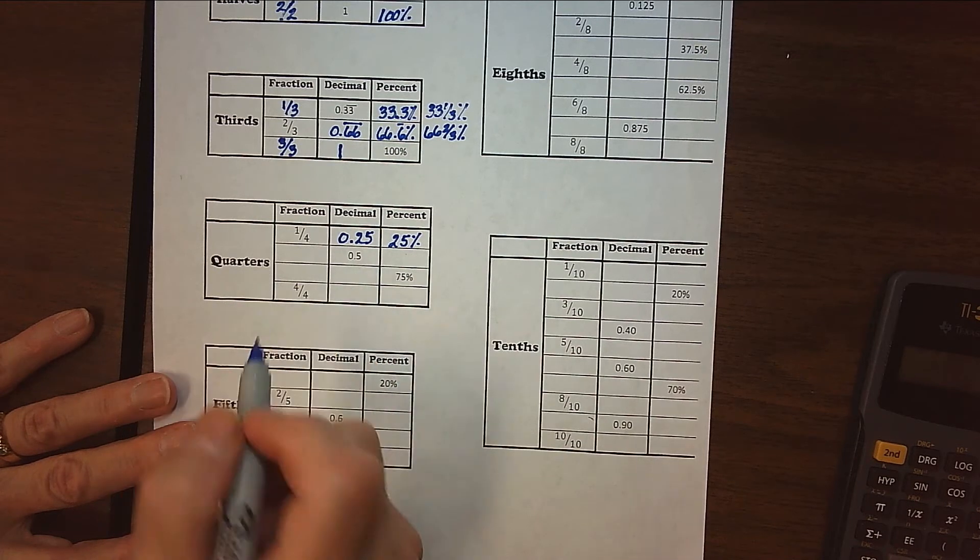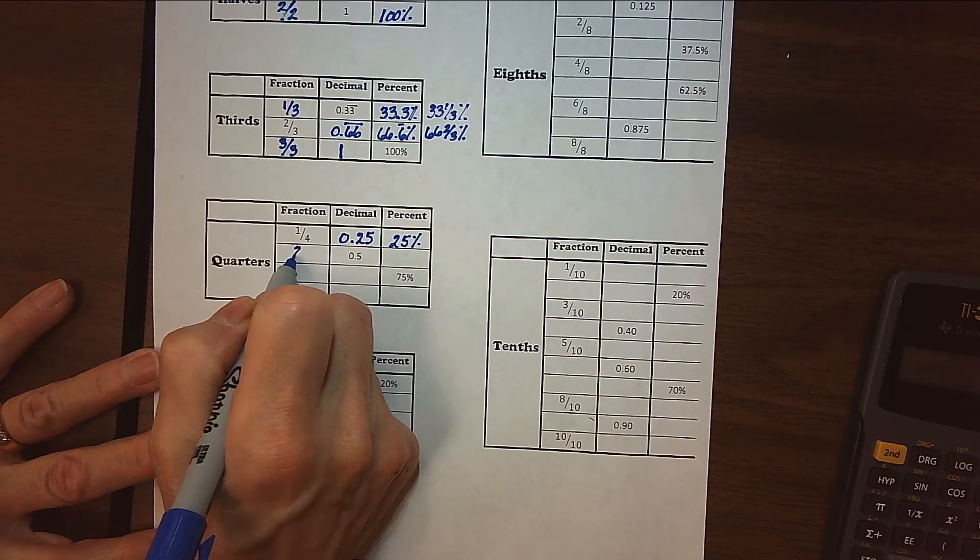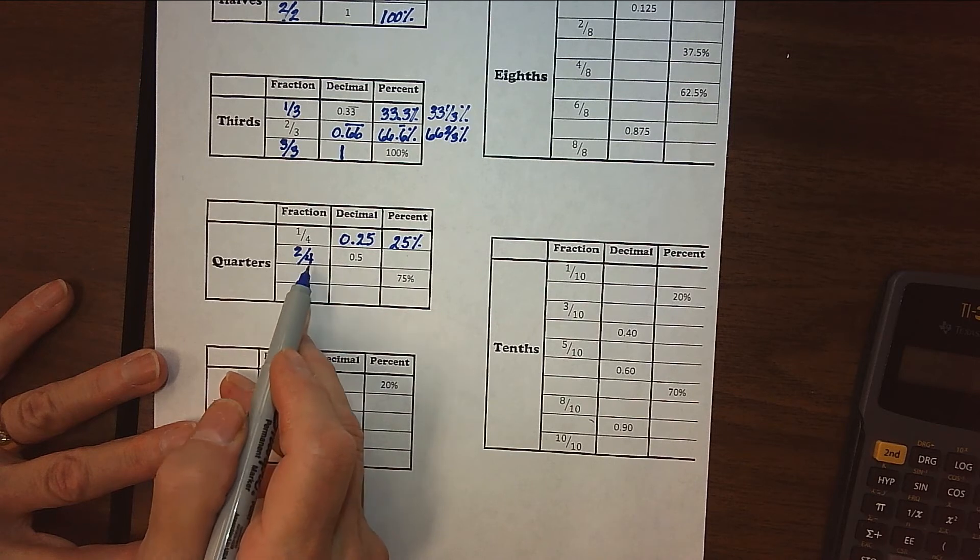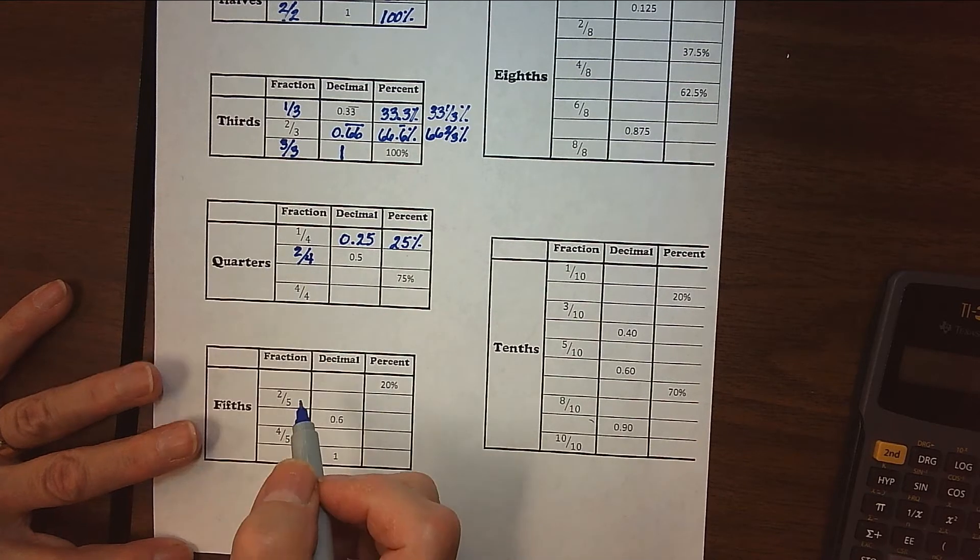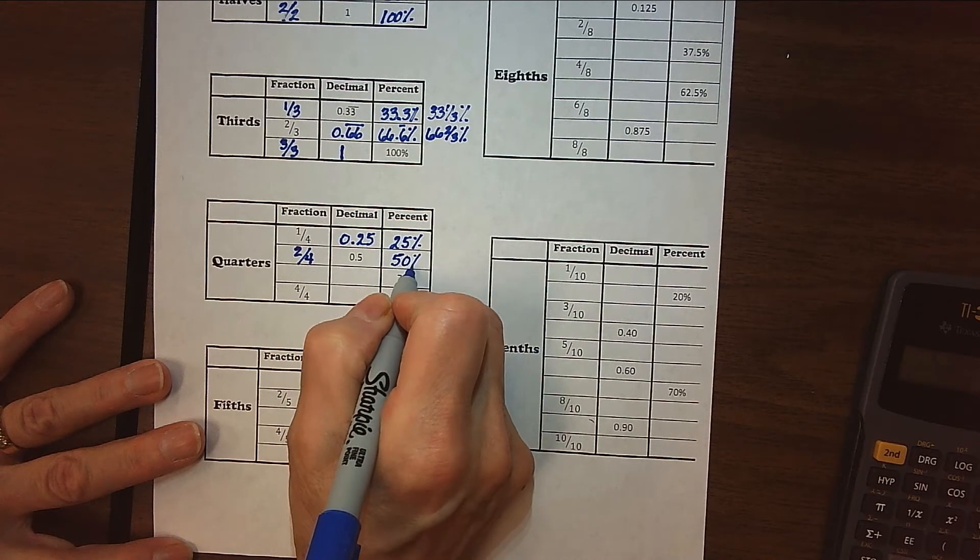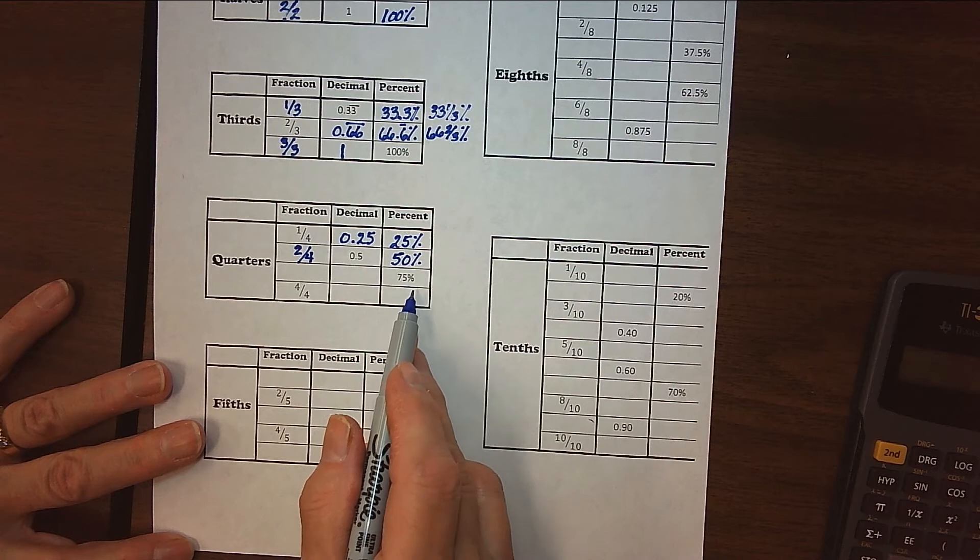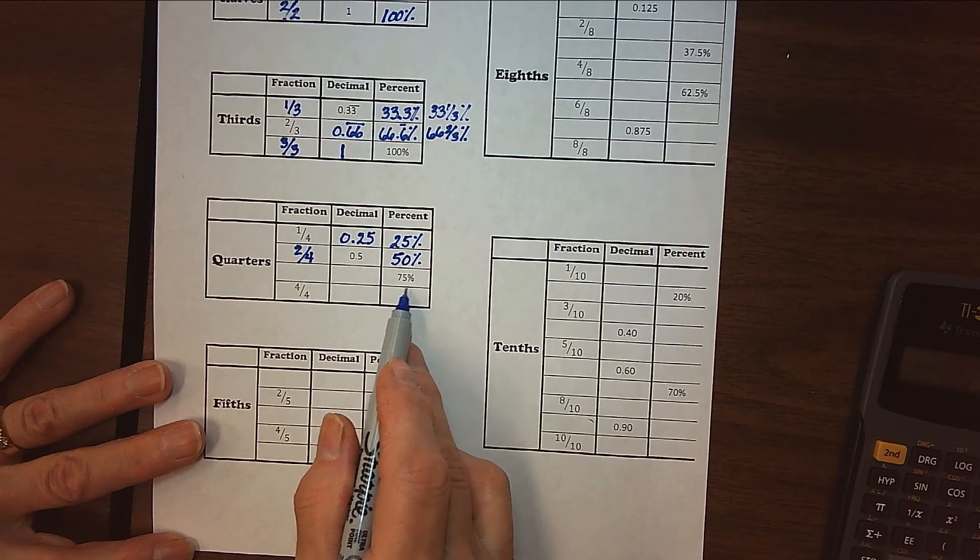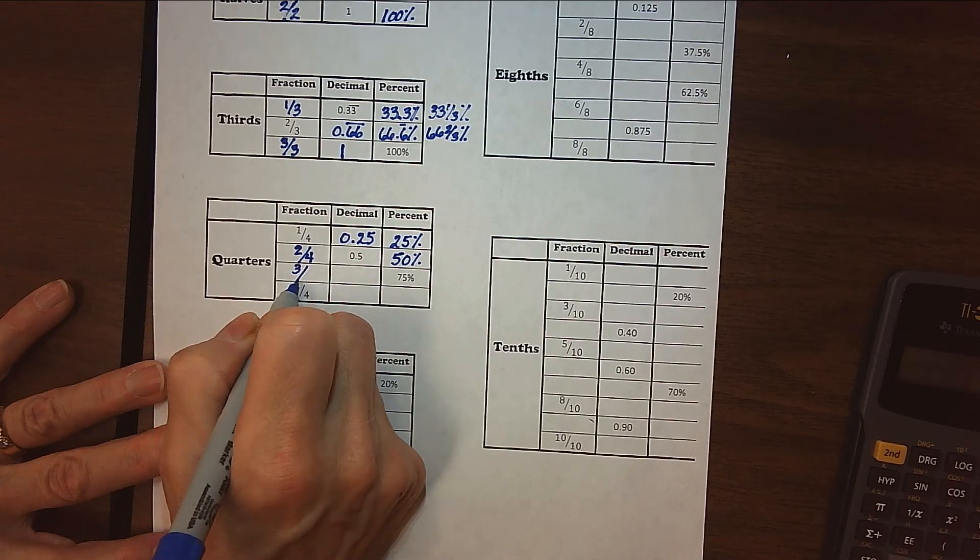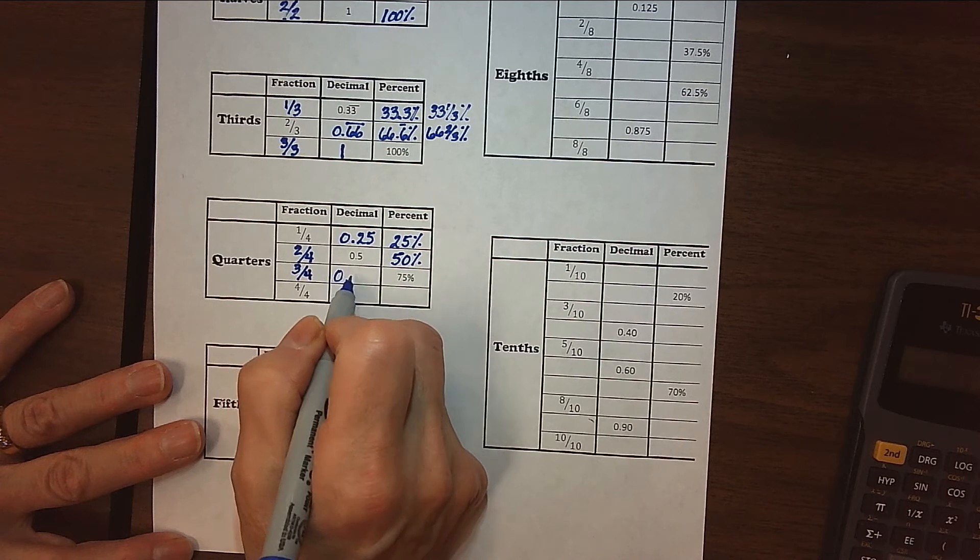Alright, 0.5. You know that that's one-half, but the fraction for one-half that goes with fours would be two out of four. If I have my candy bar cut into four parts and I have two of them, I've got 50%, right? Or half of it. And then 75%, again, thinking about one dollar if we're dividing it into four parts. Three of those four parts would be 75 cents. So three-fourths and 0.75.